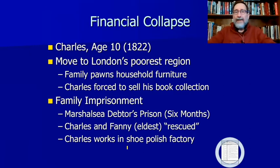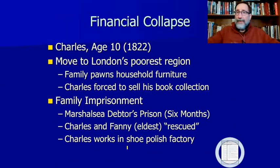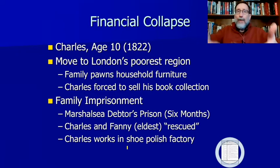The father ends up going to the Marshalsea debtors' prison for six months, and the entire family could go to prison along with him. Fortunately, Charles and his sister Fanny — and it's interesting that 'Fan' is the name of Scrooge's sister in A Christmas Carol — are going to get rescued. They're the oldest ones in the family at this time, and they have an aunt who manages to get them out of prison and finds them jobs.